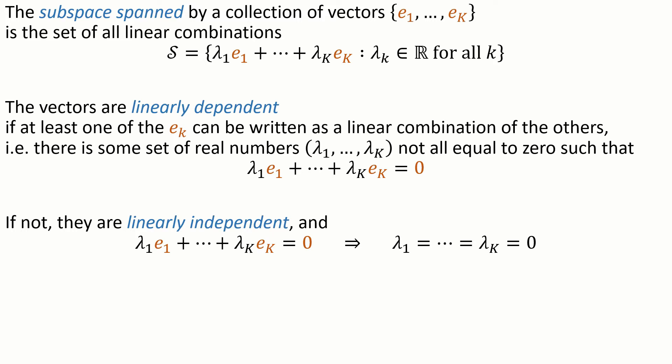If you have a collection of vectors and you want to test if they're all linearly independent, these equations tell you what to do. You just write out the equation lambda 1 e1 plus dot plus lambda k ek equals zero. You solve for lambda and you figure out from the maths if there's a non-zero solution.